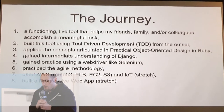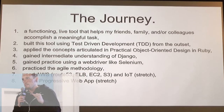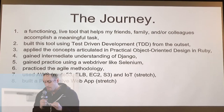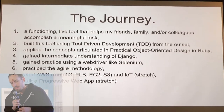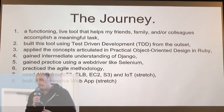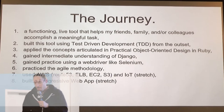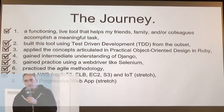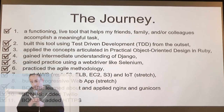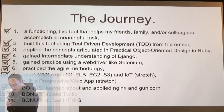So at the outset, I created about eight goals for myself. I wanted a meaningful application. I wanted to do it with TDD from the get-go, which I accomplished. I wanted to use solid design principles. I wanted to learn Django and Selenium because I wanted to do functional testing. I did it somewhat agile. I used AWS. I didn't get to the progressive web app, but I got a couple bonuses — I learned about Nginx and Gunicorn, got to add Twilio, and this is all served via HTTPS.